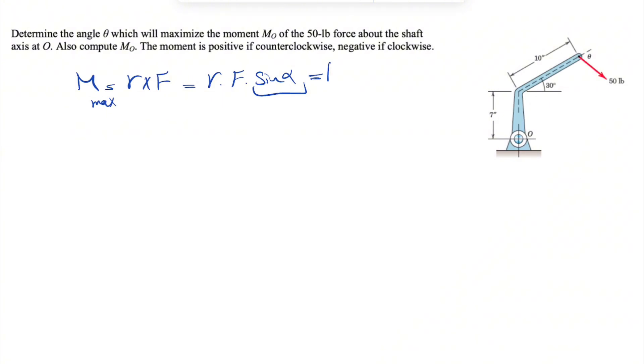That's going to happen when we have our alpha at 90 degrees, which means our R has to be perpendicular to F. So all we need to do is draw our position vector from O to this point that we have here, we can call it A. This has to be perpendicular to the force, and we can go from there.